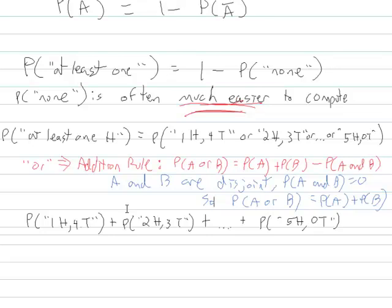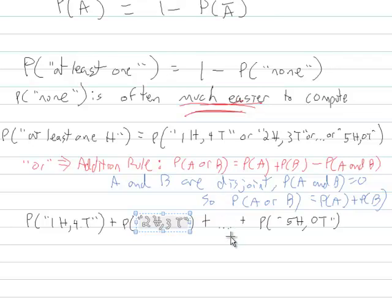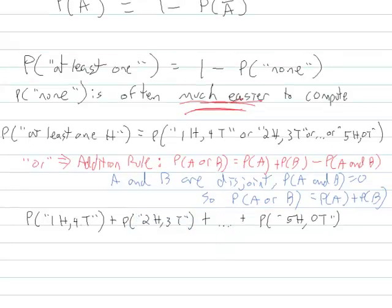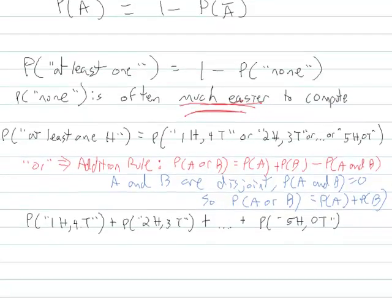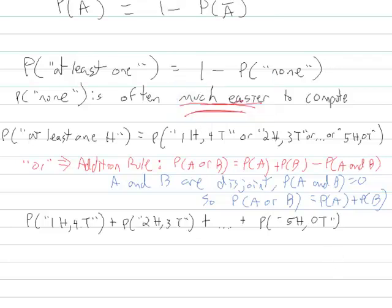Not only do I have to compute how many ways I could successfully get each combination, I also have to compute the total number of possibilities. The calculations can be very cumbersome — it's not impossible, but maybe the other way is easier. This direct approach can be very tedious to compute.